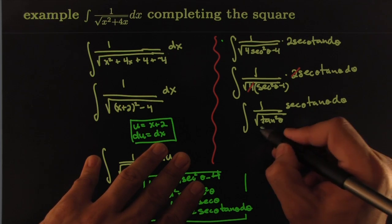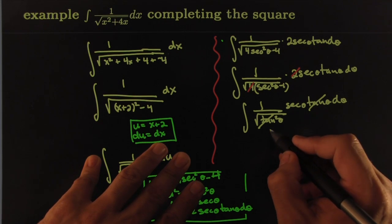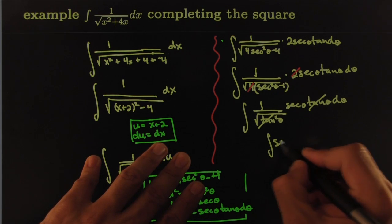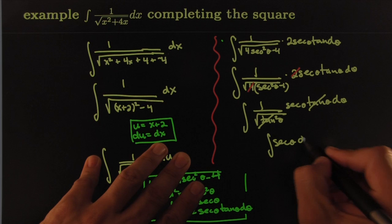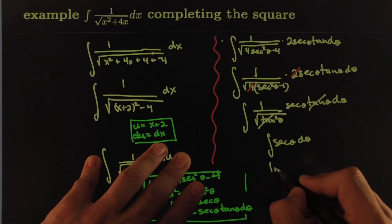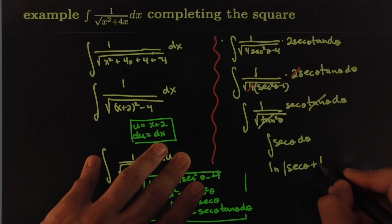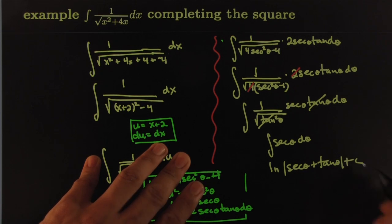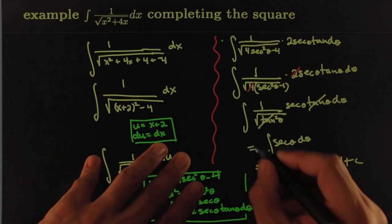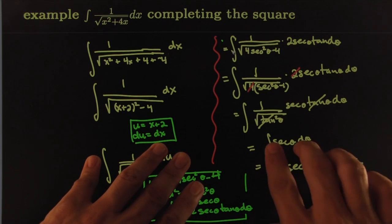The square root of tan²θ just becomes tanθ — that's gone. This gives us the integral of secθ dθ, which is well known to be ln|secθ + tanθ| + C. That result comes from a prior lecture — there are several steps involved, so if you're unsure how to get it, watch a separate video.